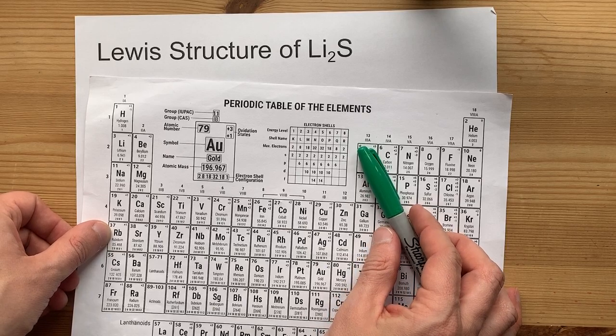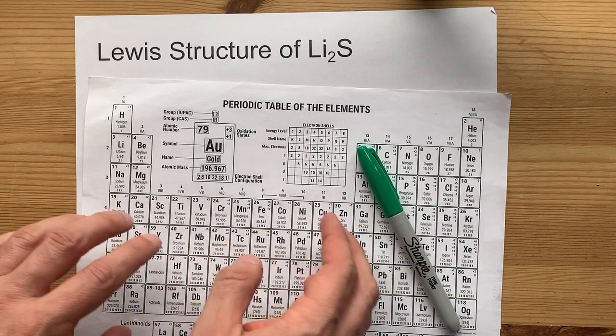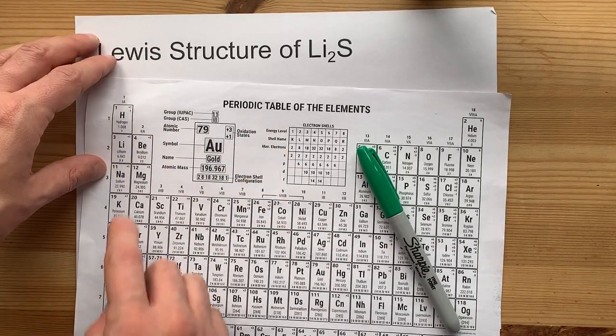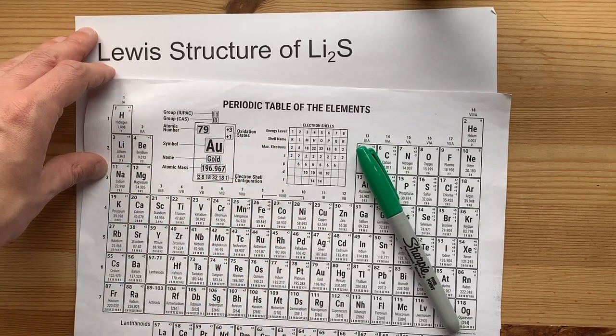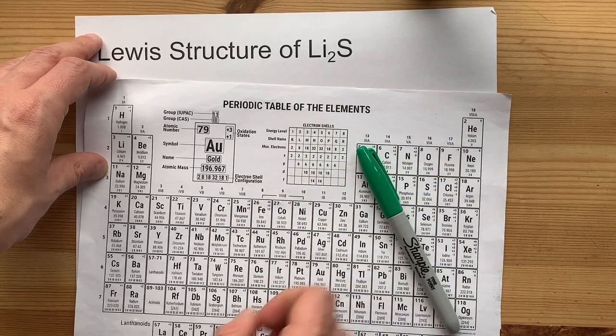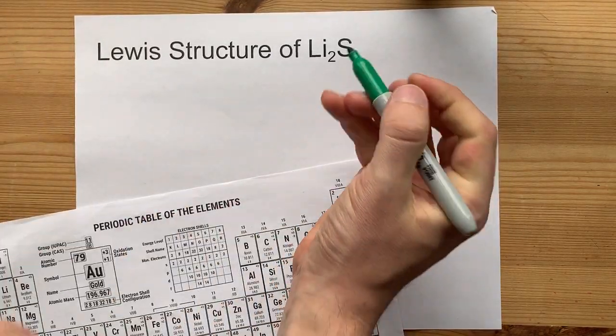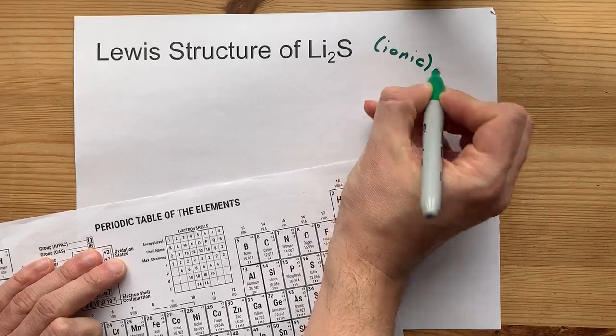The staircase of metalloids or semi-metals is here. Anything to the left of it is a metal, except for hydrogen. But lithium is definitely a metal. It's one of the alkali metals. Sulfur is here in the non-metal zone. What that means is that the metal and non-metal combination will give us an ionic bond.